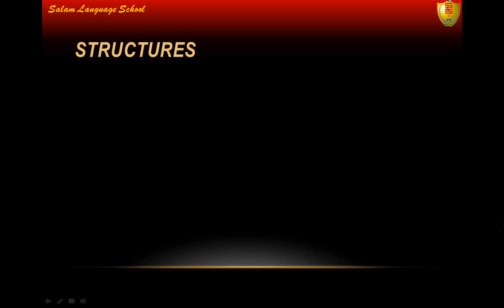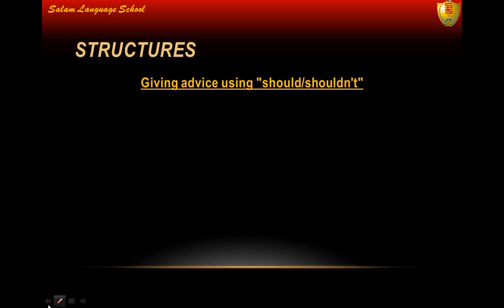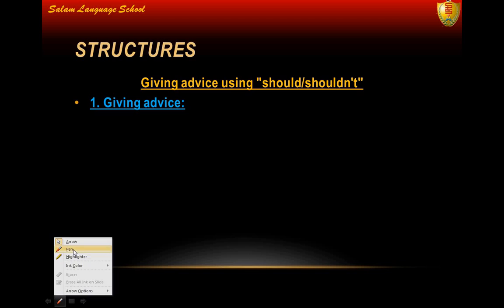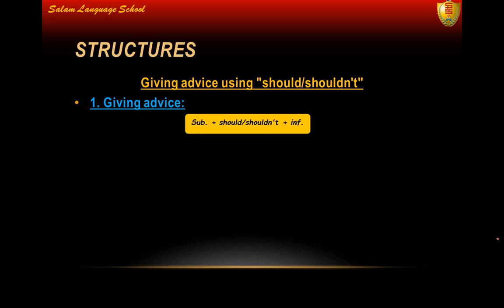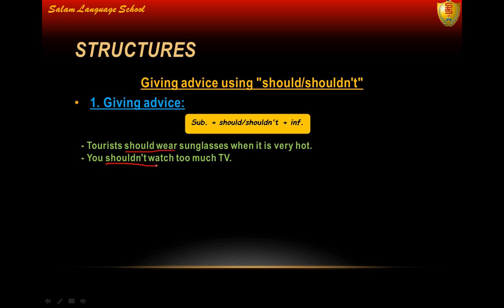Welcome back. This is unit one, part two. It's about structures and grammar. Today's grammar is about should and shouldn't — how to use should and shouldn't. We're going to talk about giving advice using should or shouldn't. We use should or shouldn't plus infinitive. For example: tourists should wear sunglasses when it is very hot. You shouldn't watch too much TV. You should do exercise every day.